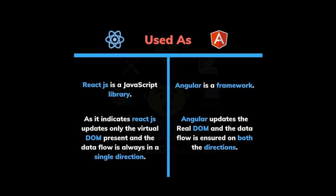First on the list, ReactJS is used as a library, whereas Angular is used as a framework. ReactJS updates only the virtual DOM, and the data flow is always in one single direction. Whereas Angular updates the real DOM, and the data flow is ensured in both directions.